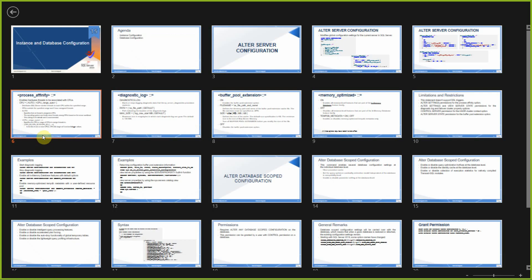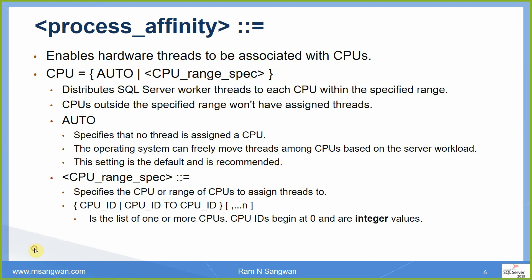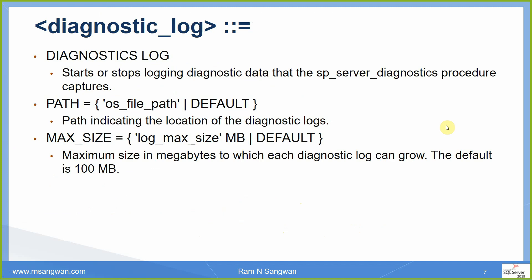The CPU range specifies which CPUs to assign threads to. You can specify a CPU ID or a range using CPU_ID TO CPU_ID — individual discrete values or range values — and you can specify multiple ranges. CPU IDs begin at zero and are integer values. For example, a range from 0 to 9 means CPUs numbered 0 through 9.